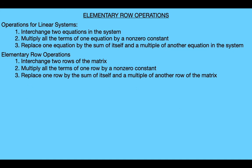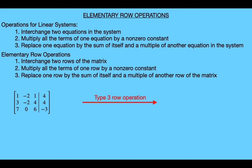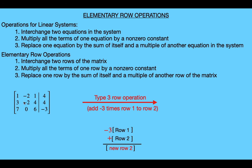Finally, for an example of the third row operation, consider this augmented matrix, and let's apply the third type of row operation by replacing the second row with the sum of itself and negative three times the first row. So we'll multiply the first row by negative three and then add that to the second row to give us our new row two. The first term of row two will equal negative three times one plus three, which equals zero. The second term will equal negative three times negative two plus negative two, which equals four. The third term will be negative three times one plus four, which equals one. And the final term will be negative three times four plus four, which equals negative eight. So we get this new augmented matrix where the second row is what we got by adding row two to negative three times row one.